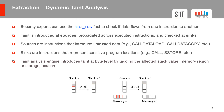We also provide a datalog fact called data flow. Security experts can use this to check if data flows during execution from one EVM instruction to another. Taint is introduced at so-called sources, propagated across executed instructions, and checked at so-called sinks. Sources are typically instructions that introduce untrusted data, such as callDataLoad or callDataCopy. Sinks are typically instructions that represent sensitive program locations, such as call or store. We implemented our own taint analysis engine that introduces taint at the byte level by tagging affected stack values, memory regions, or storage locations. For example, the add instruction takes the first two elements on the stack, adds them, and places the result back. If at least one of the two elements is tainted, then the result will also be tainted.